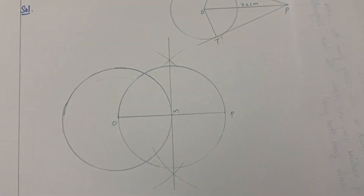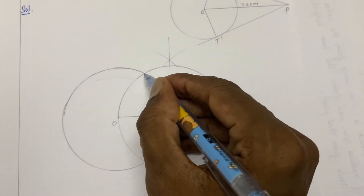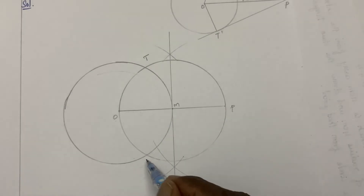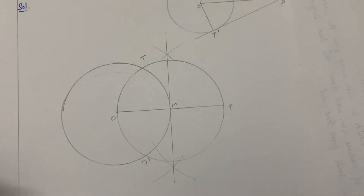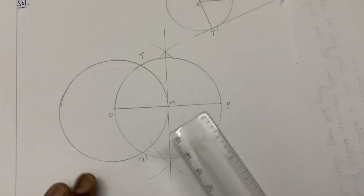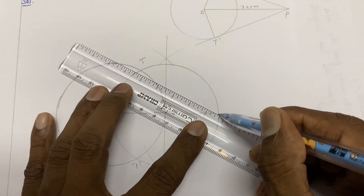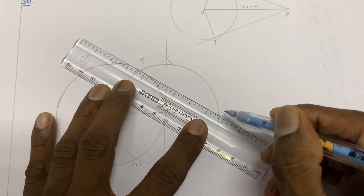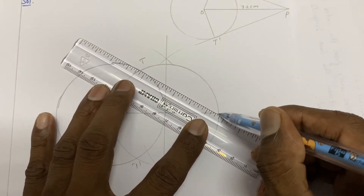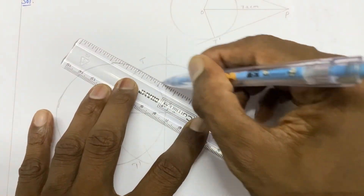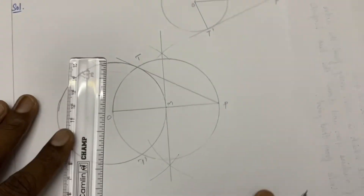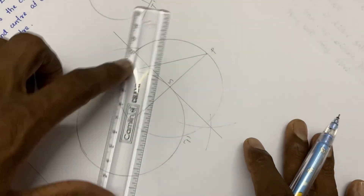Draw a circle centered at the midpoint of OP. The two circles intersect at two points — label them T and T-dash. These intersection points are the tangential points. Join P to T and P to T-dash: these are the tangent lines.